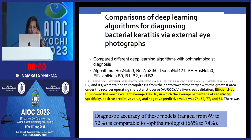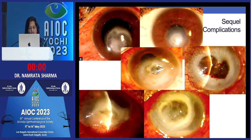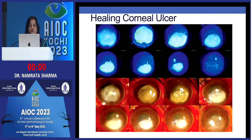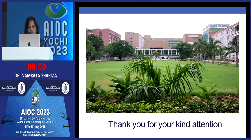Deep learning algorithms for diagnosing bacterial keratitis via external eye photographs are emerging, and artificial intelligence will guide rather than rule us in diagnosing keratitis. It is important to reevaluate and redefine our approach, especially when resistance is present. Complications can occur if not treated well, but with proper treatment, bacterial keratitis should heal with minimal haze and vascularization.